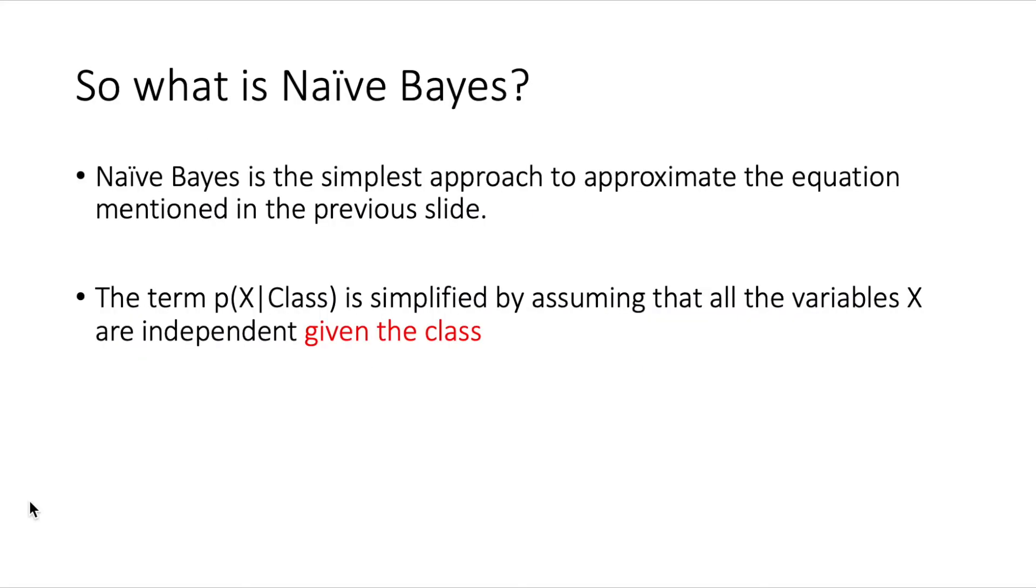So what is Naive Bayes? Well, Naive Bayes is the simplest approach to approximate the equation mentioned in the previous slide. The term p(X|Class) which was the likelihood function term, it is simplified by assuming that all the variables x are independent given the class. So in other words, this term is going to be replaced by the product of the probability of each of the variables given the class.